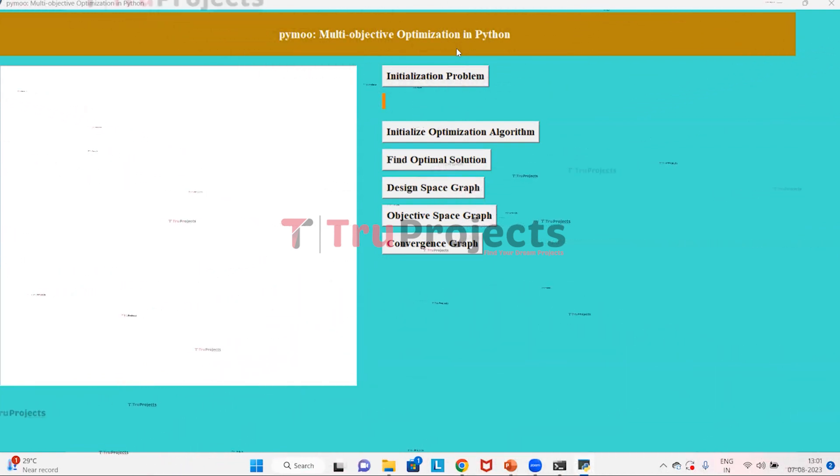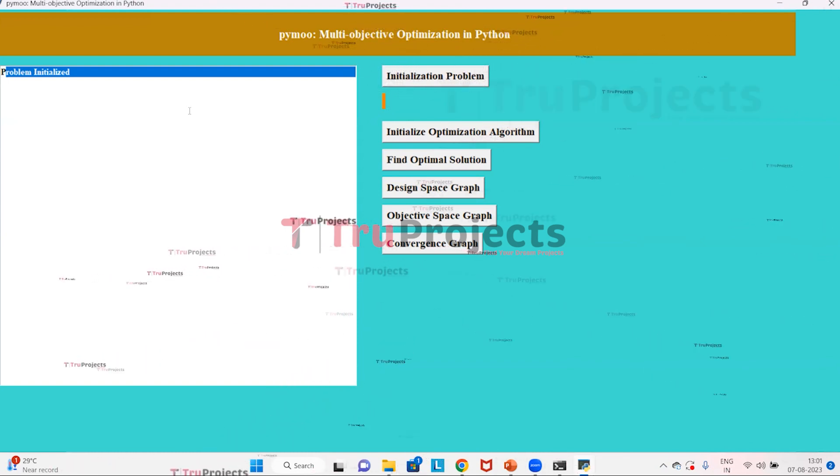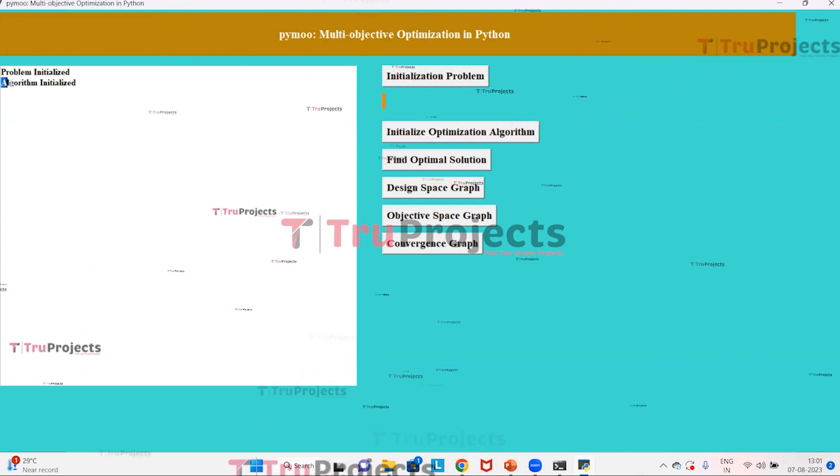This is the graphical user interface of the project, created using the Tkinter library in Python. With this, we can interact with the program. First, click on the initialization problem button to define the problem. Here, the problem is initialized. Now click on the initialize optimization algorithm button to initialize the NSGA2 algorithm.